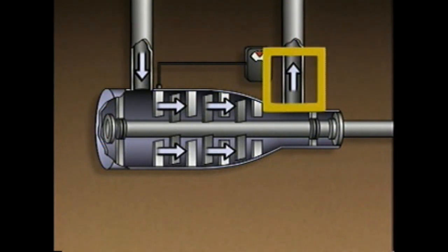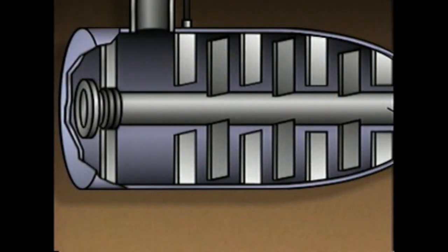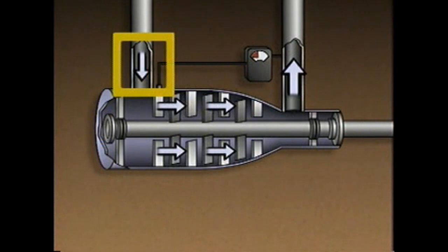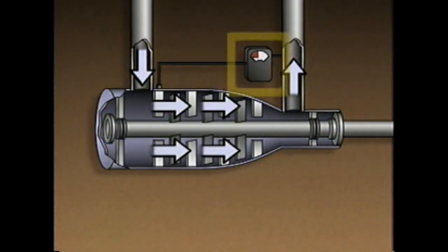As long as gas flow through a compressor matches the demand for gas, the discharge pressure also remains constant. When the demand for gas increases, discharge pressure begins to drop. The pressure controller responds to the change in pressure by opening the inlet guide vanes, which allows more gas to enter the compressor. When more gas enters the compressor, more gas can be compressed, and as more gas is compressed, the discharge pressure increases until it returns to its desired value.